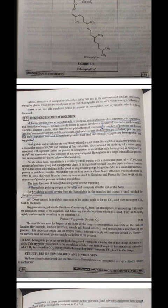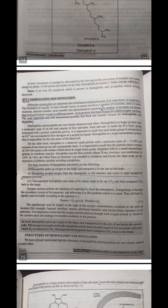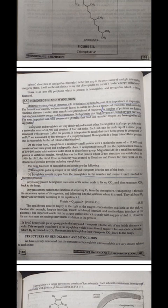Deoxygenated hemoglobin uses some of its amino acids to pick up CO2 and then transports CO2 back to the lungs. Oxygen carriers perform the function of acquiring O2 from the atmosphere, transporting it through the circulatory system of the organism, and delivering it to the location where it is used. They all bind O2 rapidly and reversibly according to equation 5.1: protein plus O2 gives protein O2.